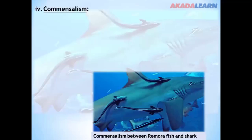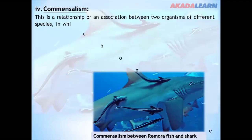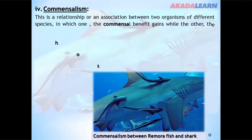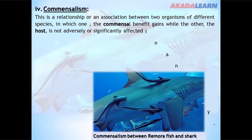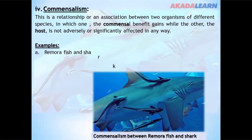Commensalism is a relationship or association between two organisms of different species in which one — the commensal — benefits, while the other — the host — is not adversely or significantly affected in any way. Examples include: the remora fish and shark; fish and crab; oyster and crab; and man and intestinal bacteria.